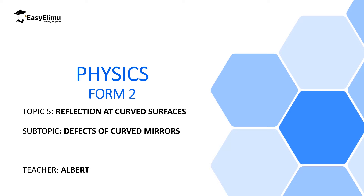However, if a wide parallel beam is incident on the spherical mirror of a very wide aperture, this is not going to be the case, since some of the rays will behave like marginal rays. They will be focused at a point along the focal plane away from the principal focus. When that happens, they are going to cause a defect which we call spherical aberration, and they are going to cause what we call a caustic curve. That is the defect we are going to discuss in this lesson.